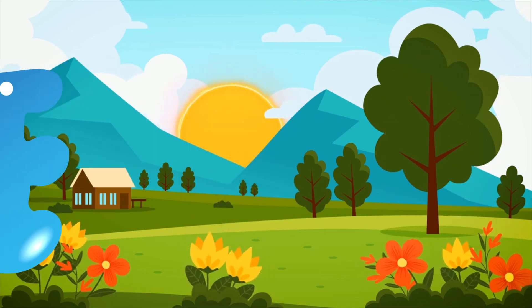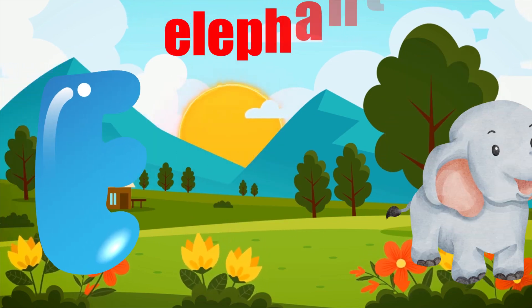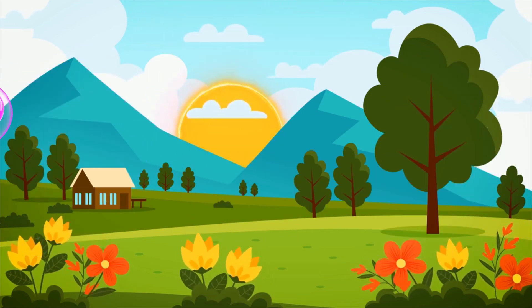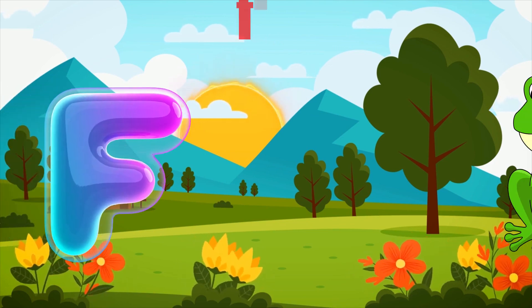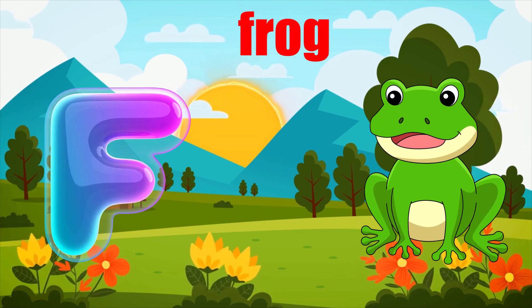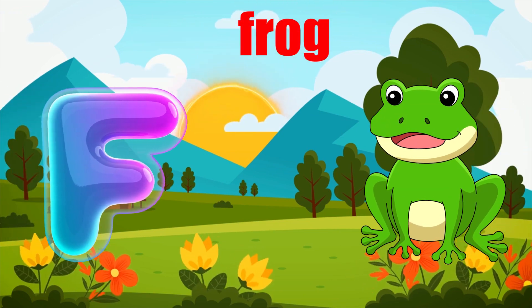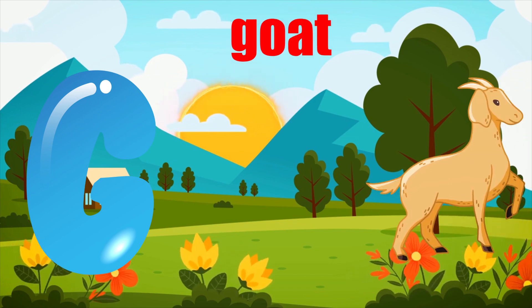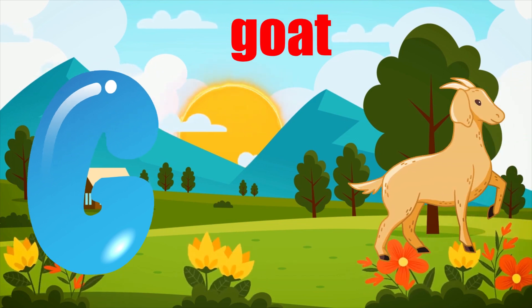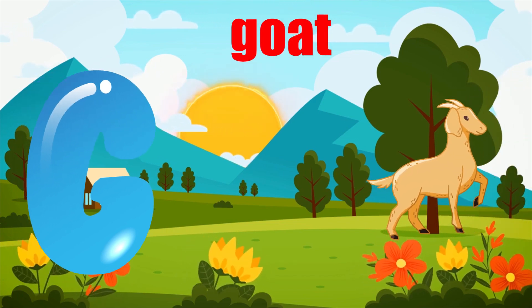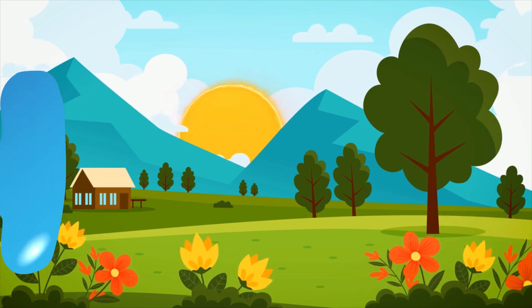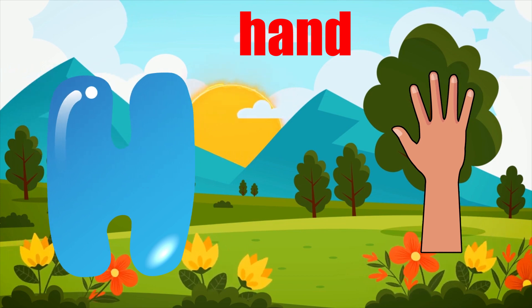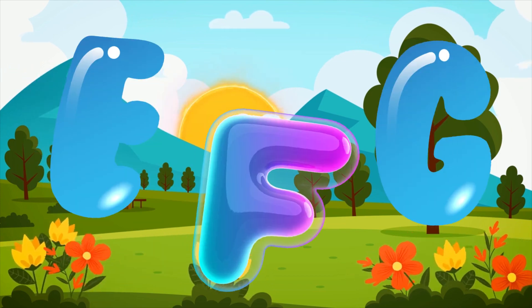E is for elephant, e-e-elephant. F is for frog, f-f-frog. G is for goat, g-g-goat. H is for hand, a-a-hand.